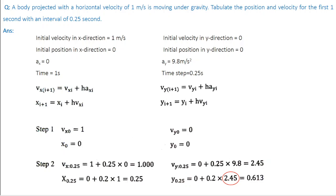Let's do a quick problem. A body is projected with a horizontal velocity of 1 meter per second is moving under the influence of gravity. Tabulate the position and velocity for the first 1 second with an interval of 0.25 seconds. What are the parameters given? The initial velocity in the x direction is 1 meter per second.